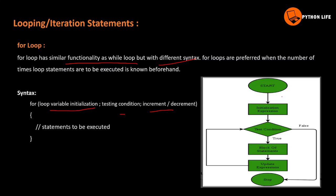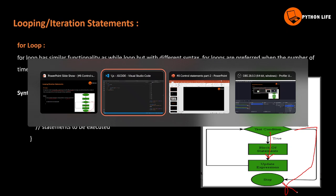Let me show you the for loop flowchart. You start with an initialization expression, then check the test condition. If true, you execute the block of statements, then update the loop variable. Then you recheck the test condition. If false, you go to the next statement after the loop.